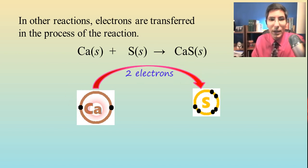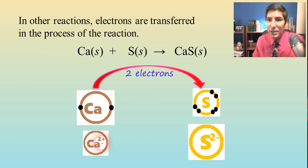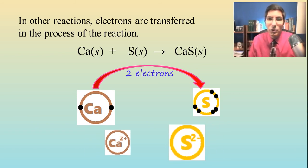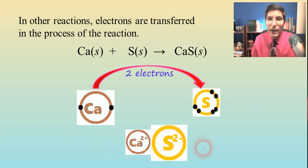And so when that happens, calcium has lost those electrons. And so it's a cation. It's got a positive charge. It's a little bit smaller, as you can see. And sulfur has gained these electrons. And so it's an anion. It's got a negative charge. It's a little bit bigger, as we can see. And now they have this electrostatic attraction. And they're attracted to each other just like that. And so they're able to make a compound.